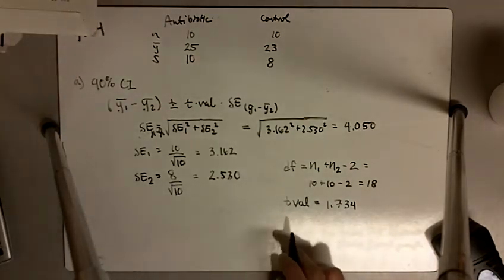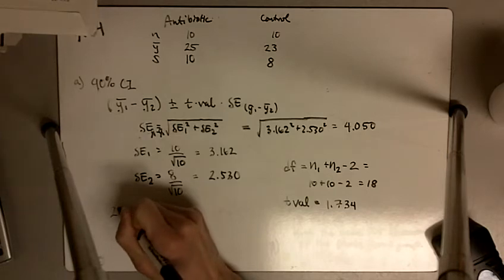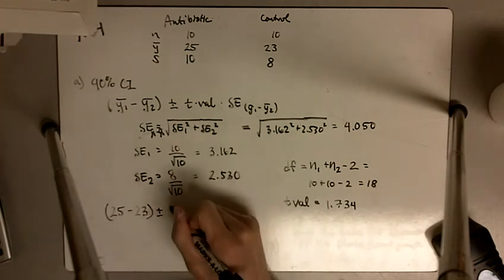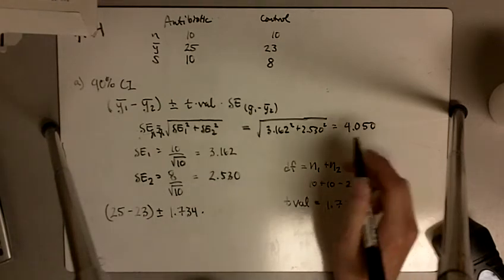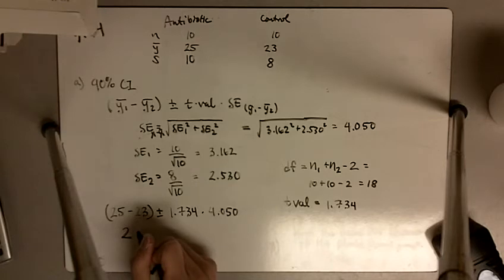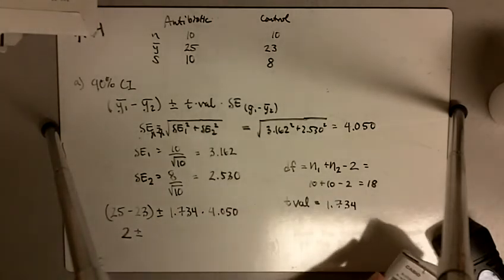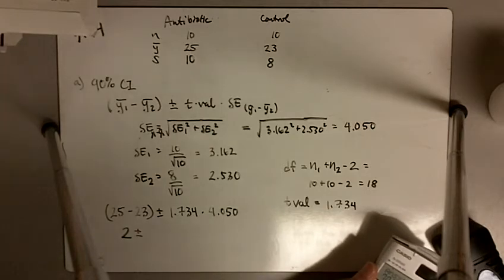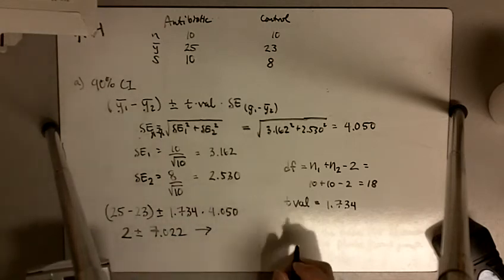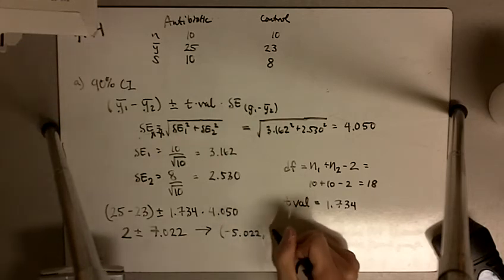Now we have both numbers. So ȳ₁ bar is 25 minus ȳ₂ bar of 23, plus or minus our t-value of 1.734 multiplied by our standard error of 4.050. 25 minus 23 is 2, so the antibiotic group had 2 seconds higher prothrombin times, plus or minus 7.022. That gives us a confidence interval of negative 5.022 to positive 9.022.